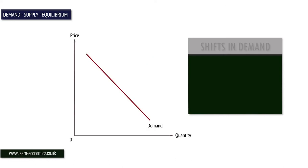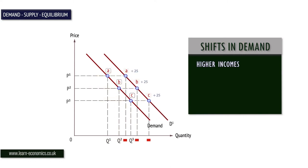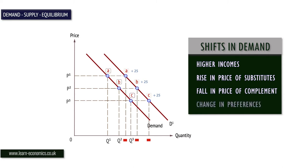A demand curve can shift to the right, an increase, or to the left, a decrease. With an increase, more goods are demanded at all prices. Possible factors causing this include higher incomes, assuming a normal good, an increase in the price of a substitute, a fall in the price of a complement, and changes in tastes and preferences.